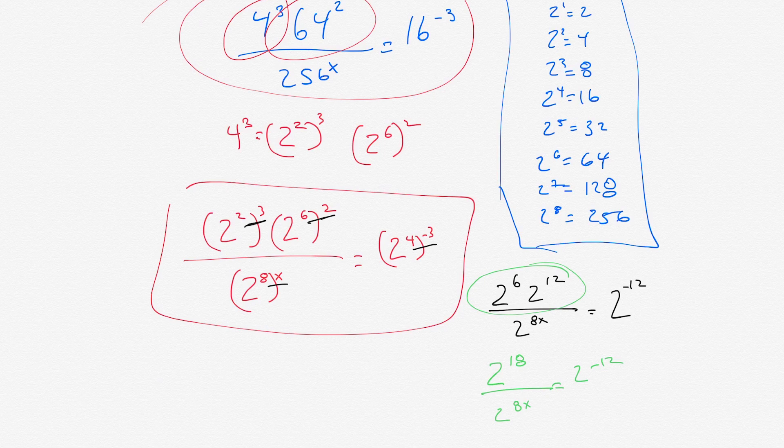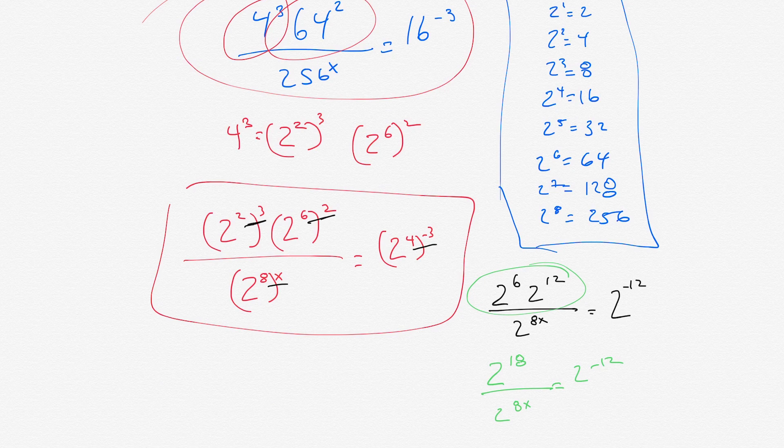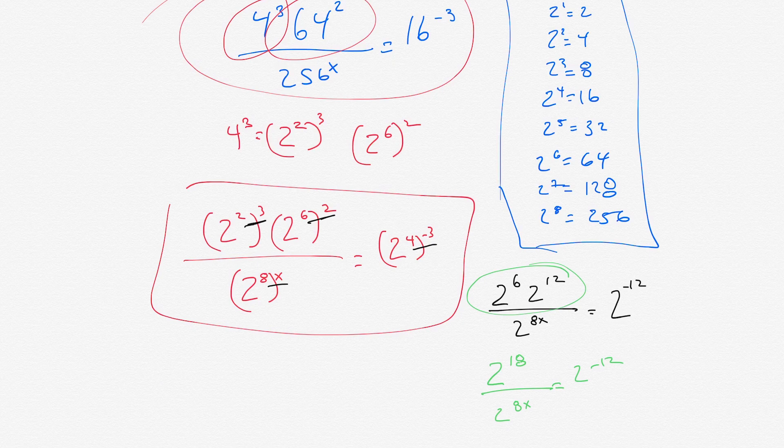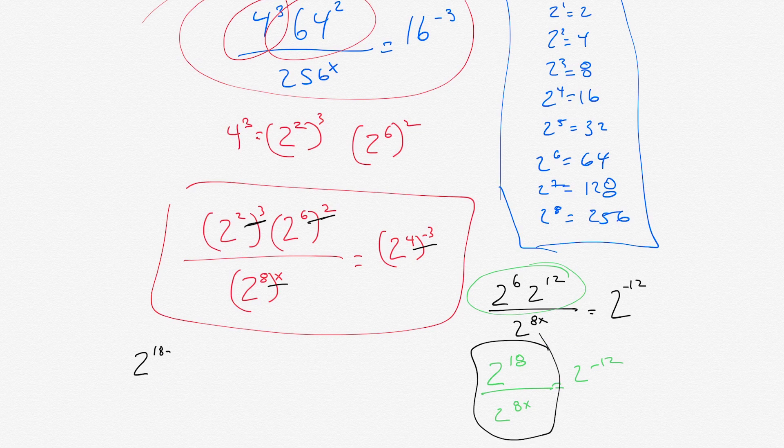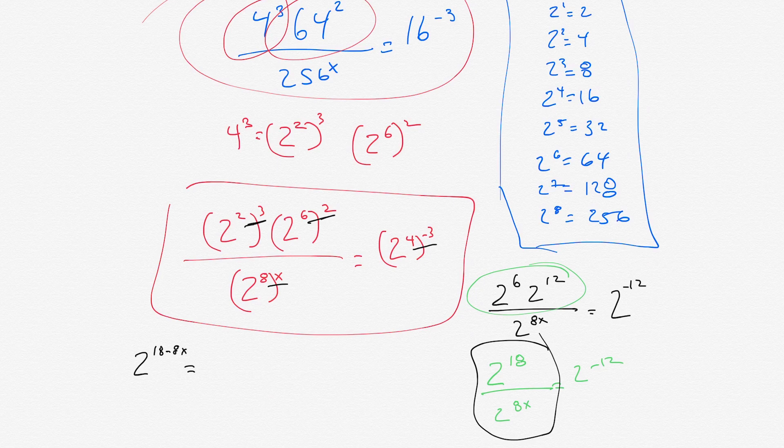There's a few ways we could do this. Probably, what I would do is, we have 2 to the 18 over 2 to the 8x. We go 2 to the 18. And then, whenever we have this division, we just subtract the exponents. So, 2 to the 18 minus 8x equals 2 to the negative 12.